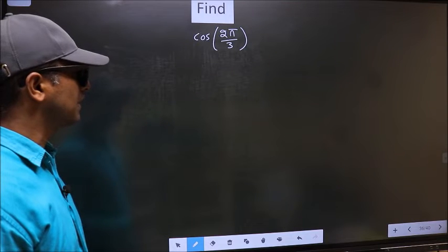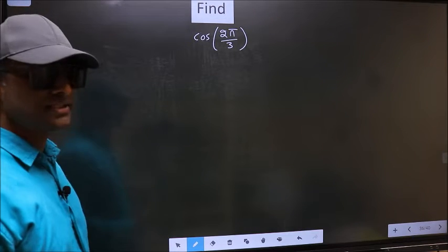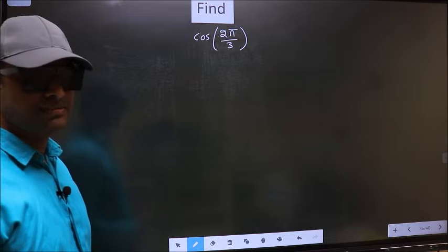Find cos 2π by 3. To find this, we should follow this method.